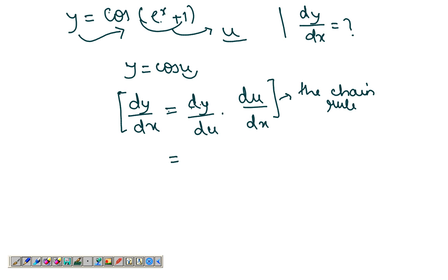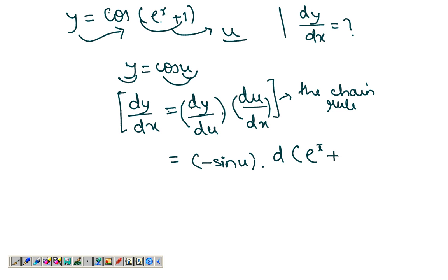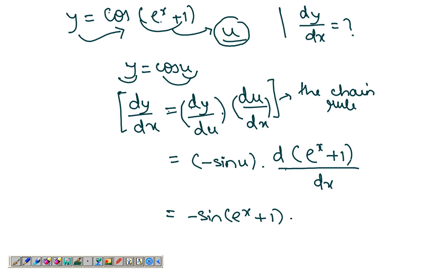Now dy/du is the derivative of y with respect to u, which is -sin(u). And du/dx is the derivative of u = eˣ + 1 with respect to x. Since u = eˣ + 1, this gives -sin(eˣ + 1) times eˣ, because the derivative of eˣ is eˣ and the derivative of the constant 1 is 0. So that's your answer.